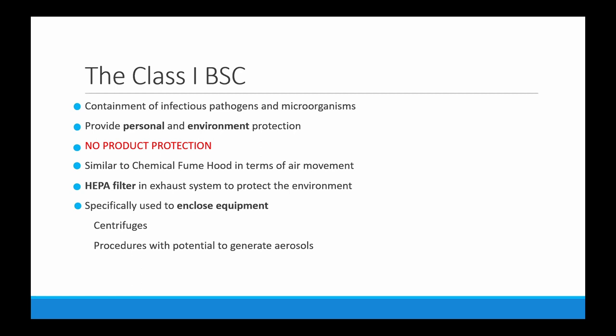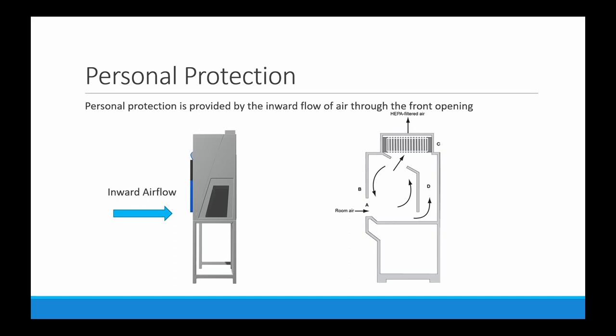Class one biosafety cabinets are similar to a chemical fume hood in terms of air movement. HEPA filters, which stand for High Efficiency Particulate Air filters, are embedded in the exhaust system for contaminated air purification. Class one biosafety cabinets are specifically used for enclosed equipment such as centrifuges and procedures that have the potential to generate aerosols.